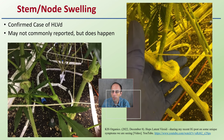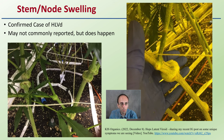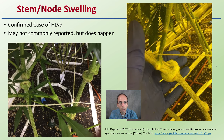There's also been evidence of this stem or node swelling. I'm not sure how common this is, but another YouTube video showed a confirmed case of Hop Latent Viroid with this. May not be commonly reported, but it definitely does happen. This kind of node swelling is very distinctive — something very unique that would stick out. If you're seeing that, you might want to get that plant tested.